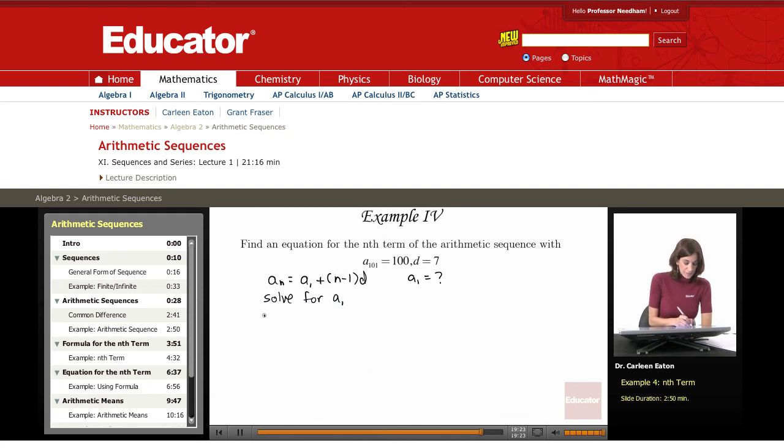So I have a sub 101 equals 100, and I don't know the first term. I know my n for this term is 101, and I'm going to say minus 1 times the common difference, which is 7. So this gives me 100 equals a sub 1 plus 100 times 7.